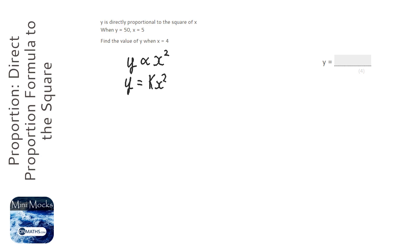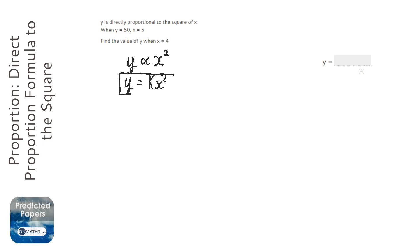A lot of students miss out that first step and just go straight to the second: y equals kx squared. That's our general formula, but we need to find out what k is. So we're going to go off to the side to find out what k is.